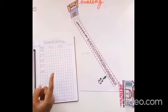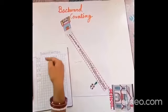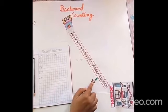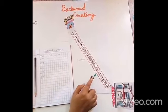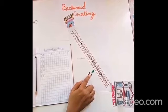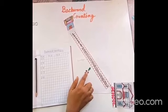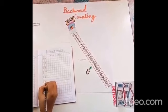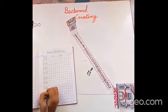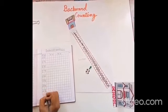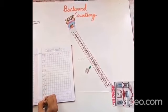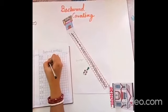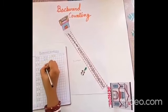Remember children, in backward counting we always write bigger number to smaller number. Again start. Step number 25, step number 24, 23, 22, 21, 20, and 19. Let's write. 25, 24, 23, 22, 21, 20, and 19.